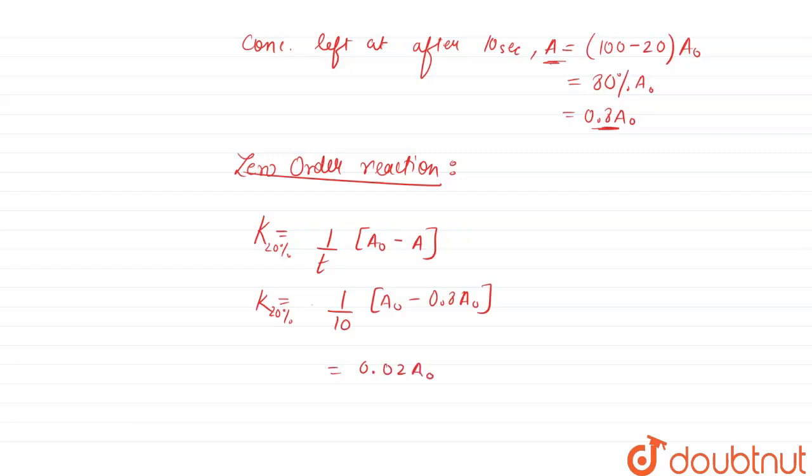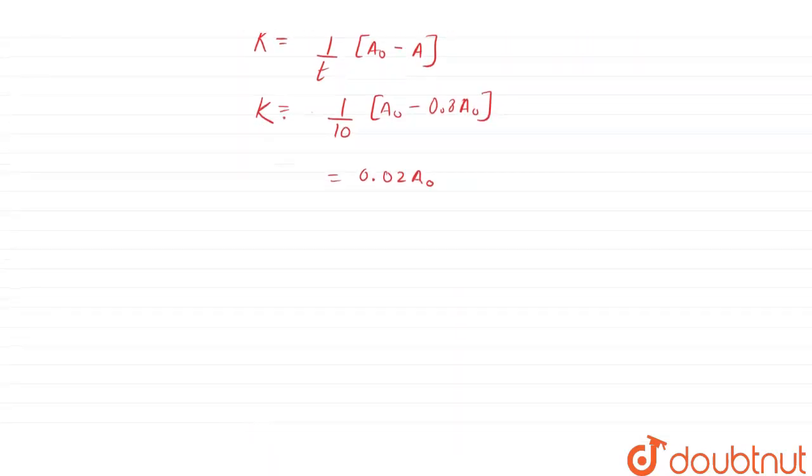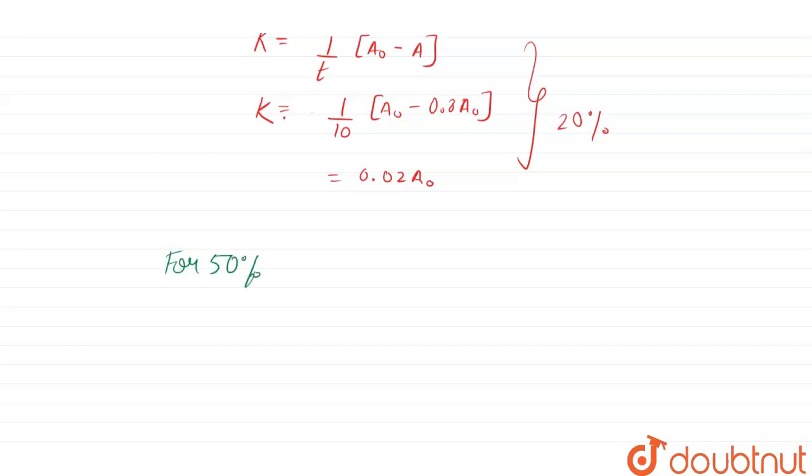This is our rate constant for zero order reaction. Now for 50% completion of the reaction, this was for 20%, now we have to calculate for 50%. We know that initial concentration will remain, initial concentration will be equals to A₀.